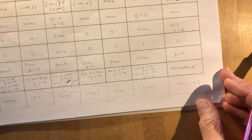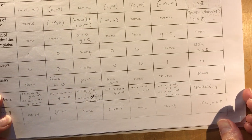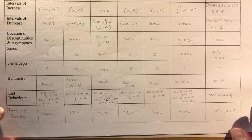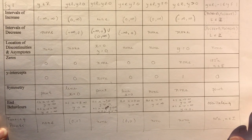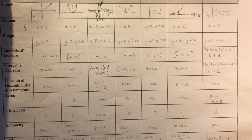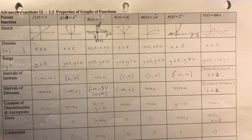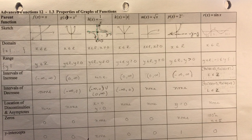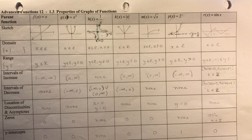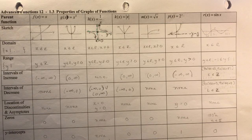I'll scroll slowly back up to the top so you can freeze-frame and look at all the different properties for each of the graphs. That's today's lesson. I hope that helps you out and gets you prepared for your unit one test. Make sure you understand this very completely — I'll try to put in some examples on the test.